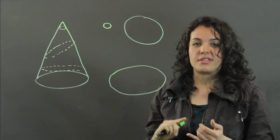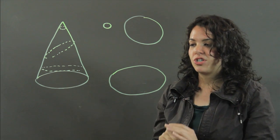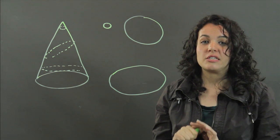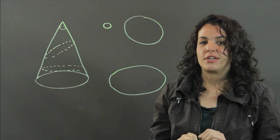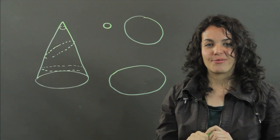So it's not only a different size, it's a completely different shape. So the answer is no, not all the cross-sections of a cone are congruent. Thanks for watching.